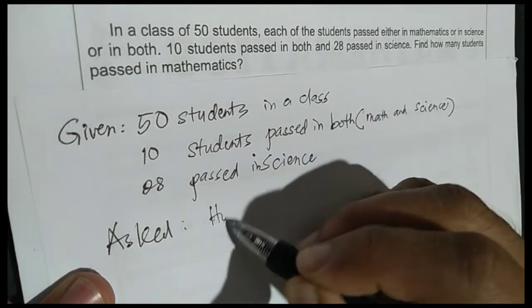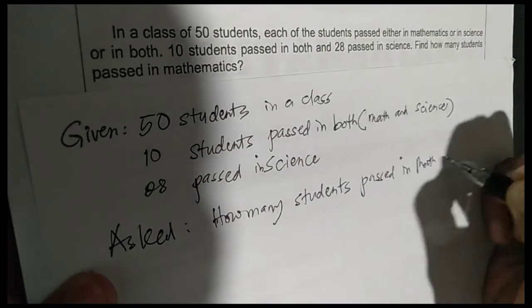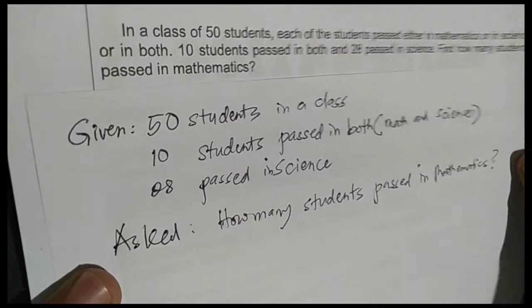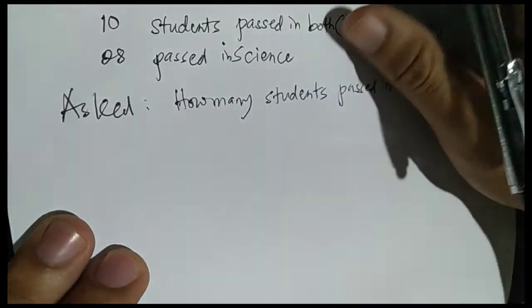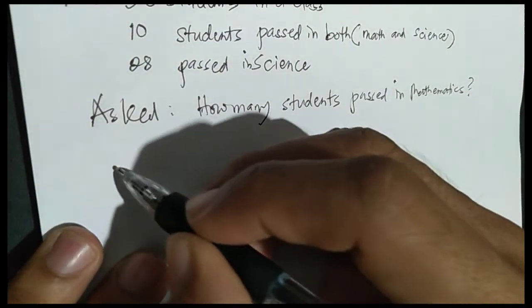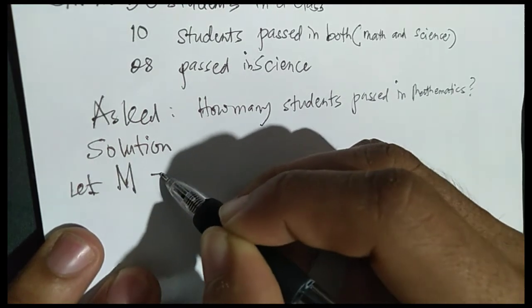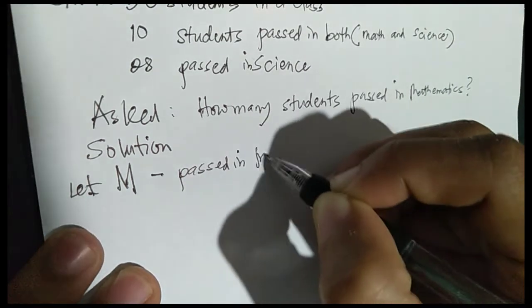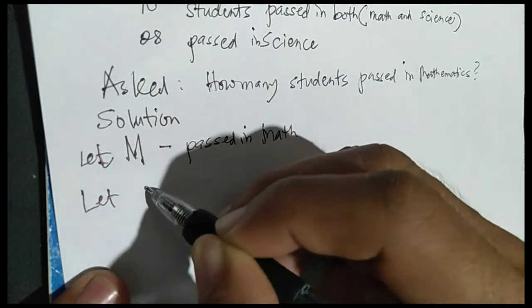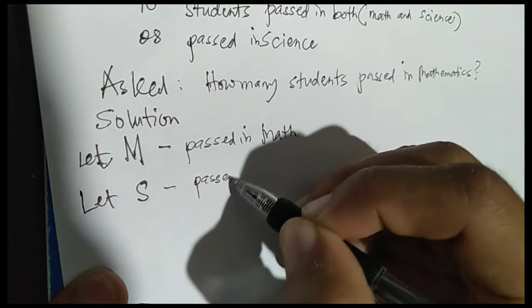Find how many students passed in mathematics — that's what we're asked. Using the Venn diagram, let us make M. Solution: Let M be our set of students who passed in mathematics, and let S be the set of students who passed in science.